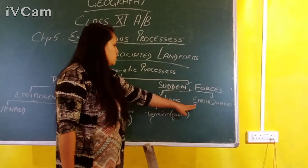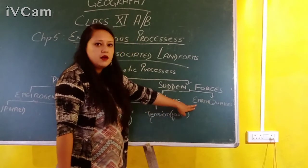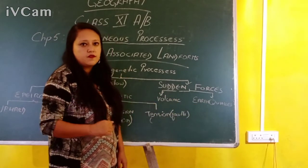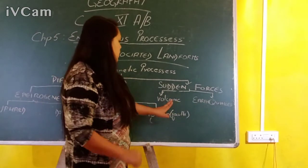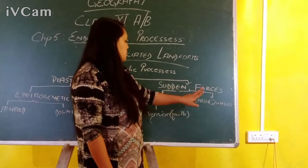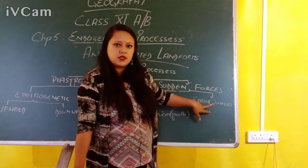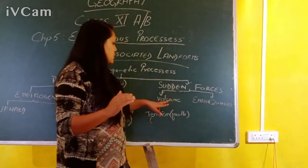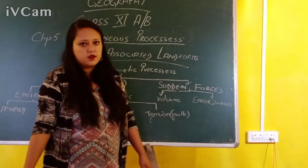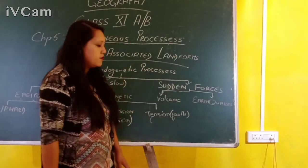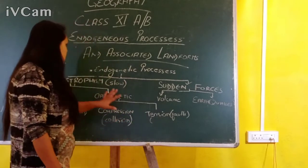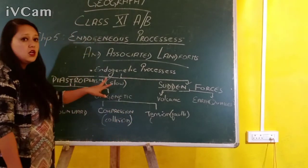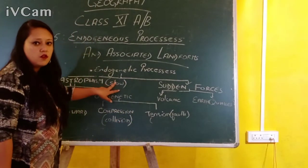Both volcanic eruptions and earthquakes take place from the interior of the earth, and when they occur there are changes in the physical features on the surface of the earth. Now we will focus on diastrophism, that is the slow forces.